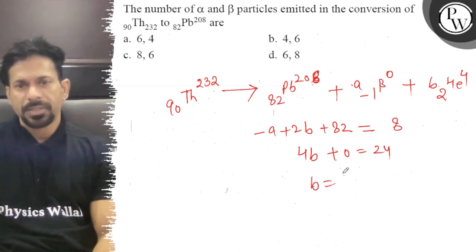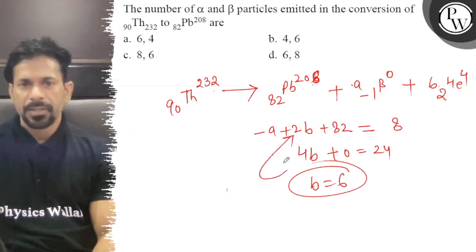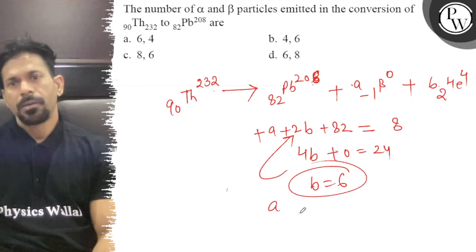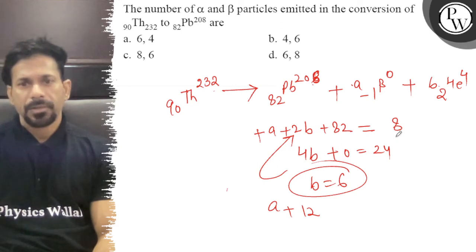So b to aega 6, yaani ke alpha to aega 6. So b ko yaha daal do. So a plus 12, or yeh kitna aega, apne 8. 8 kaise hoi? Yeh kya hai, 82.